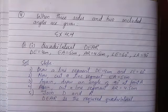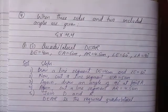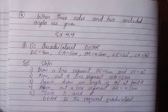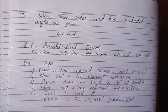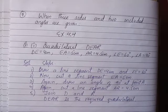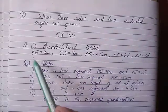This is Exercise 4.4. The quadrilateral is DEAR. DE is 4cm, EA is 5cm, AR is 4.5cm. The angle is 60 degrees, the angle is 90 degrees.